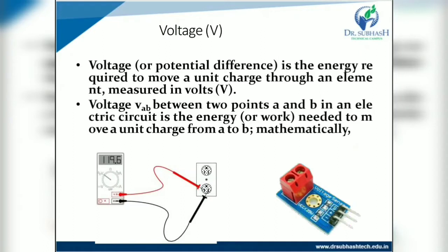What is voltage? Voltage or potential difference is the energy required to move a unit charge through an element, measured in volts, denoted by capital V. Current is denoted by capital I. Voltage V_AB between two points A and B in an electric circuit is the energy or work needed to move a unit charge from A to B. When charge moves from one point to another, there is a potential difference measured in volts.